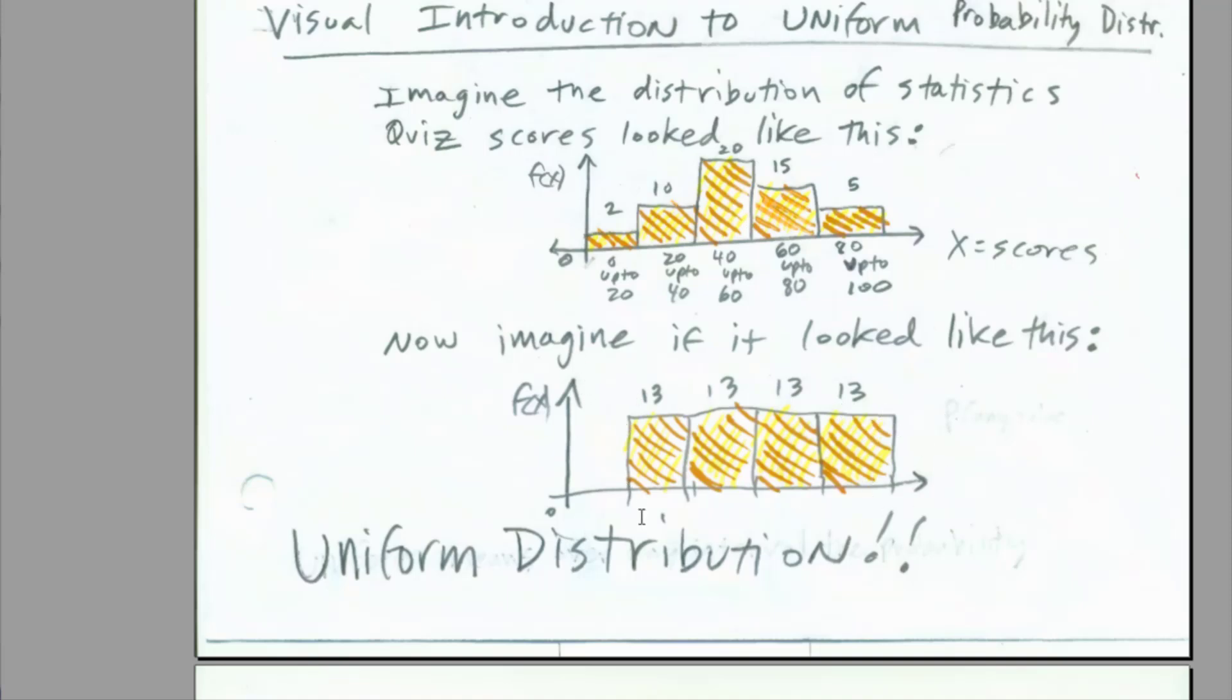Now, what in the world is a uniform distribution? Just imagine this histogram here for test scores. 20 people got from 40 to 60 points, 15 people got 60 to 80, and 5 people got 80 to 100. Normally, the columns for a histogram are different heights. That means the count for each would be different, and the relative frequencies would be different. But now, imagine this. Same categories down here, but every single category got the same count, which means it would have the same relative frequency or probability.